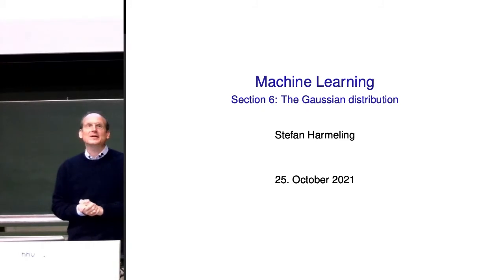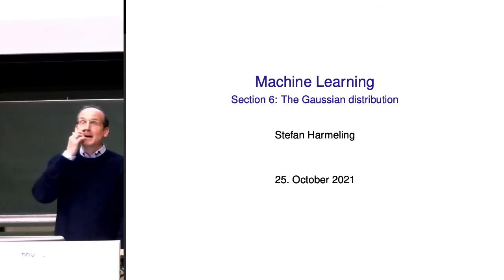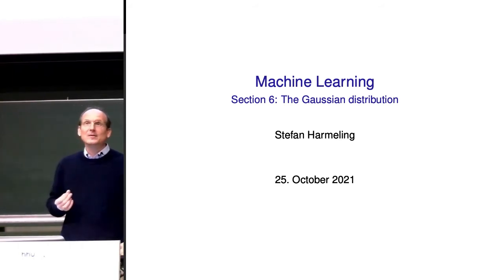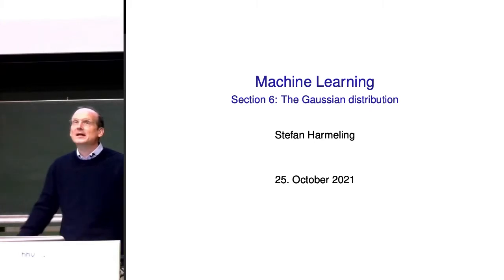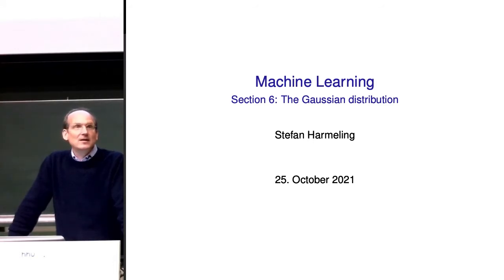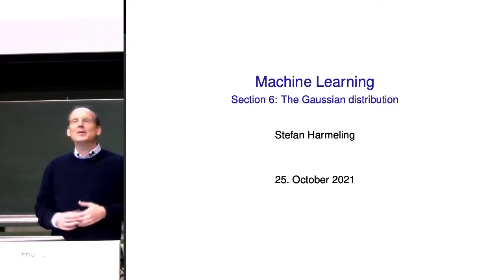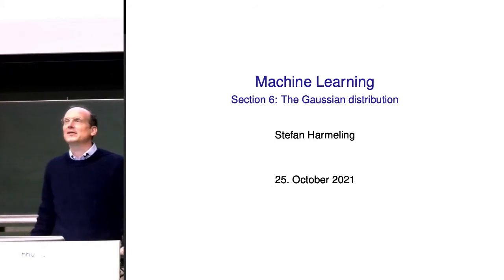Today we continue with our next section on the Gaussian distribution. You might be surprised that you can have a whole lecture on the Gaussian distribution. As a little preview, there's a quote from Philip Henick, who is a professor at Tübingen University. He was one of my colleagues when I was in Tübingen, and he says the Gaussian distribution is the linear algebra of probability theory. We will see today what he means by that.